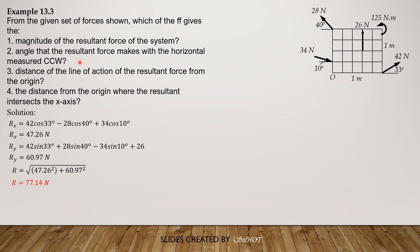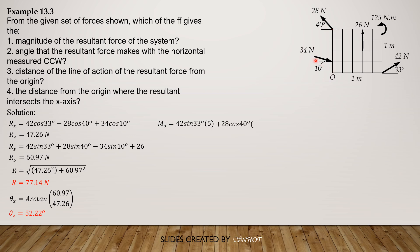The angle that the resultant makes with the horizontal measured counterclockwise is arctan of Ry over Rx, since both components are positive. So theta x equals 52.22 degrees. For the distance of the line of action from the origin, let's compute the moment about O first. For the 42 N force, only the vertical component has moment about O. Taking counterclockwise positive: 42 sine 33 times 5 meters, plus 28 cosine 40 times 4, minus 34 cosine 10 times 1, plus 26 times 3, plus 125. So MO equals 369.69 newton-meter counterclockwise.